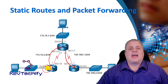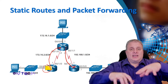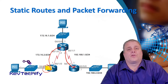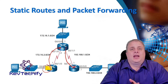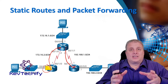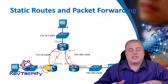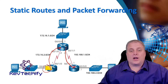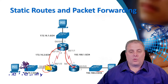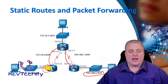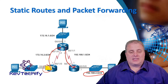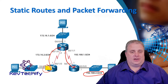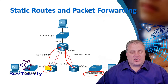R3 then gets it, de-encapsulates it from its layer 2 frame, and looks for the layer 3 destination IP address. It identifies that destination IP address as a network it knows. It's a directly connected network — the 192.168.2.0 network, directly connected. We can deliver it.